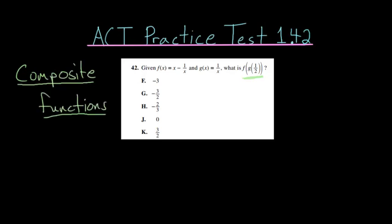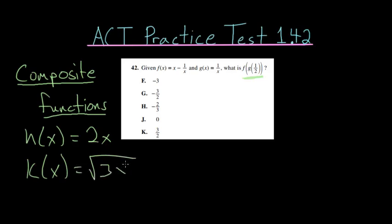So let's look at a simple example before we move on to the specific problem. Let's say that h of x is equal to 2x and k of x is equal to the square root of 3x.